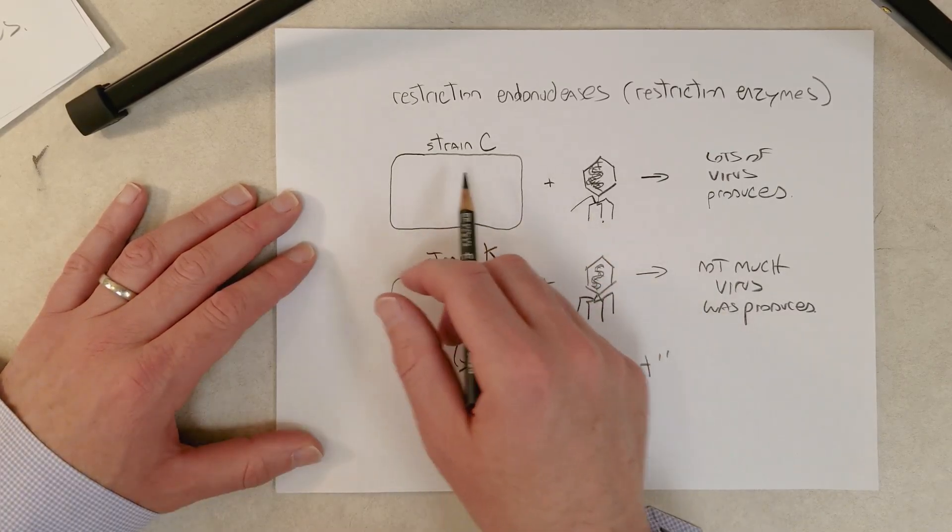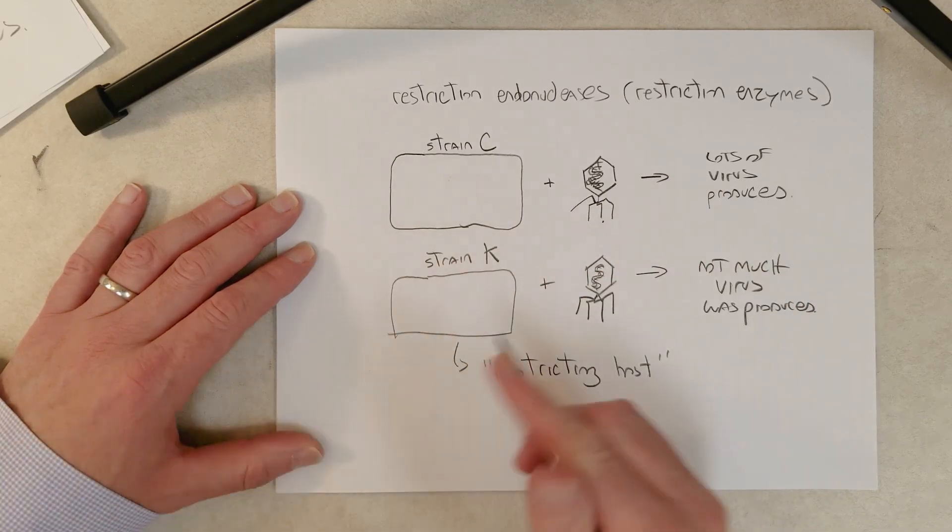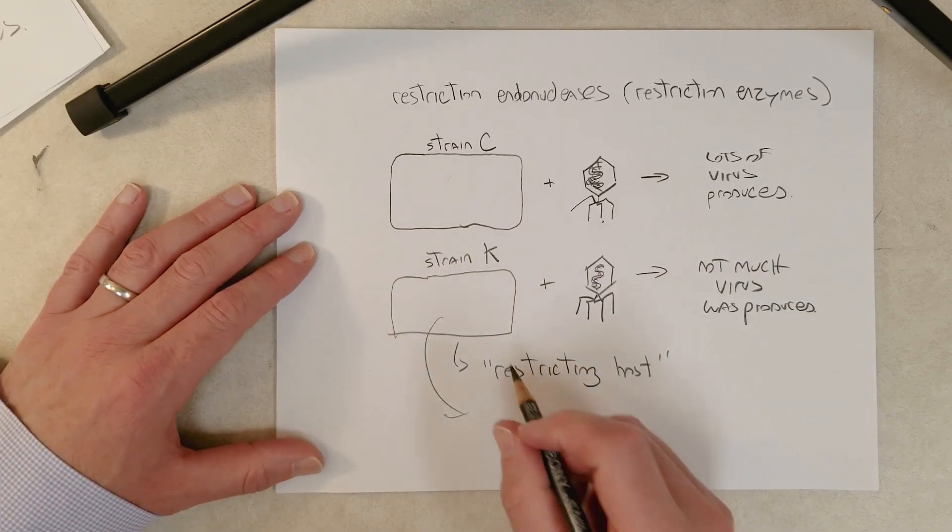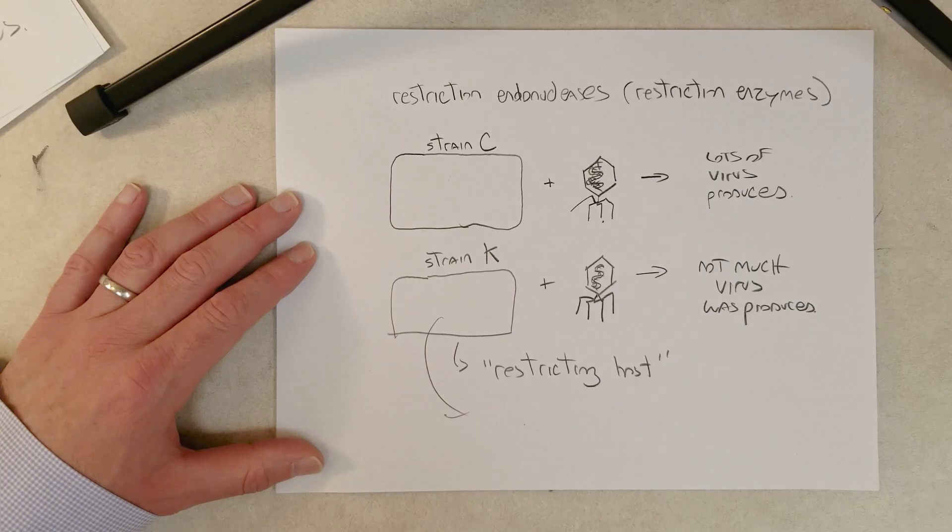Strain K didn't have that enzyme, and that's why the infection produced lots of virus. So that's where that term restriction endonuclease comes from.